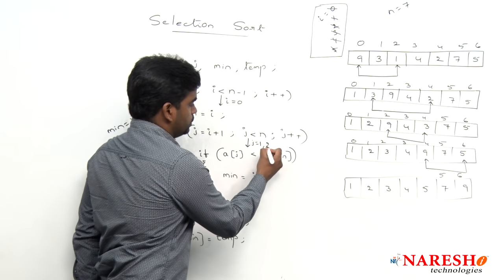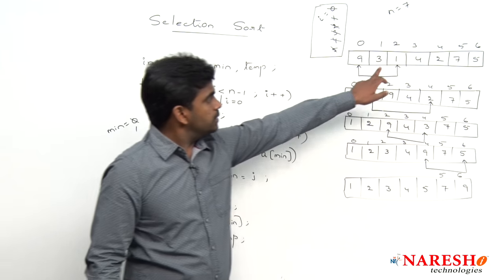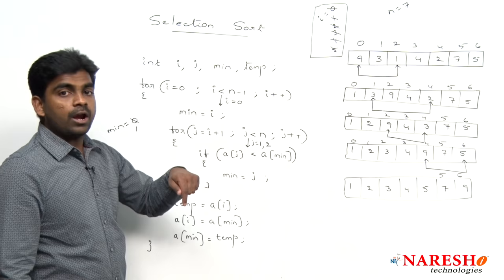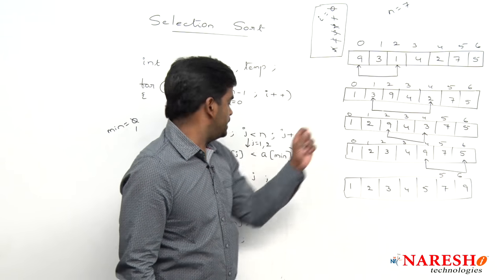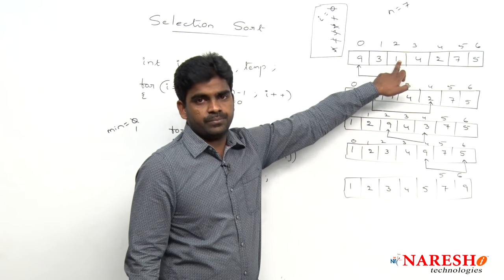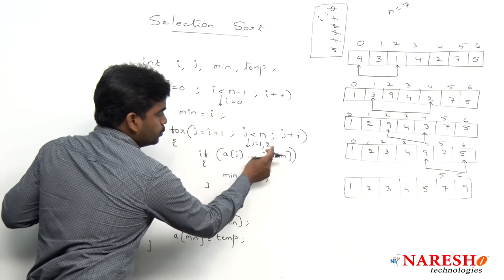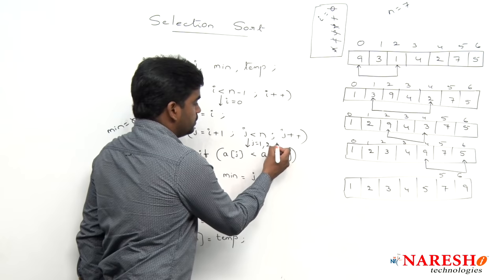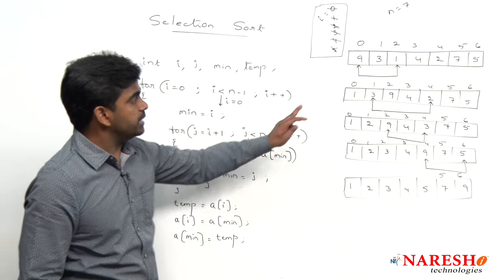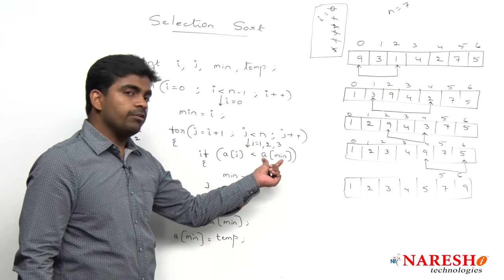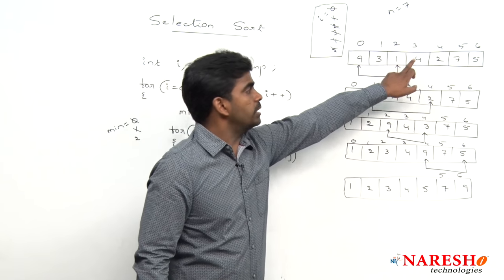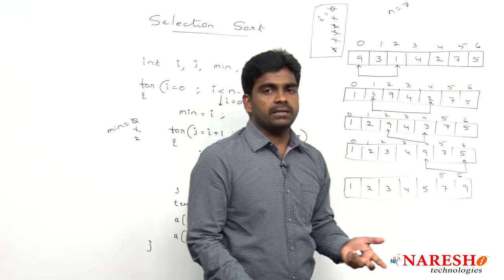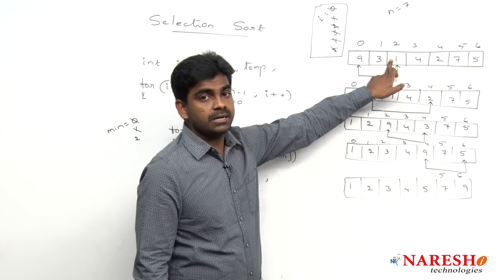Next, j becomes 2. a[2] is 1, which is less than a[min] — a[1] is 3 — so condition is true. We found a new minimum, so j value 2 is stored into min. Now min is 2. Then j becomes 3: a[3] is 4, compared with a[min] which is 1 — fails. Similarly 2, 7, and 5 all fail comparison with 1. So 1 at index 2 is confirmed as the minimum element.